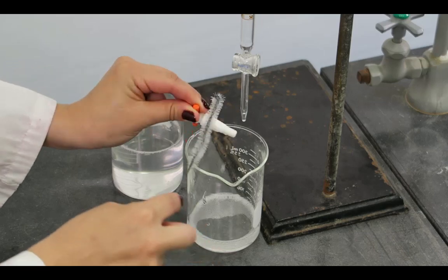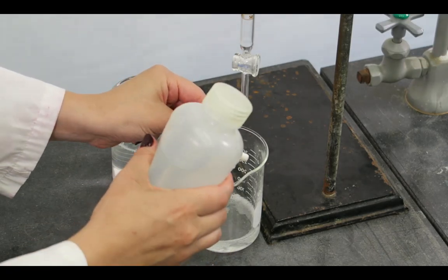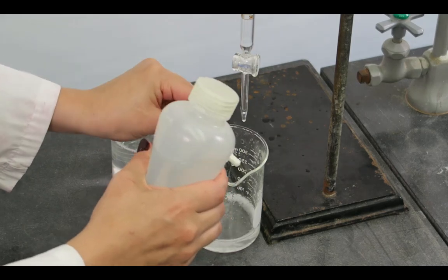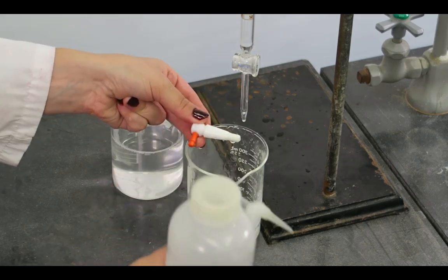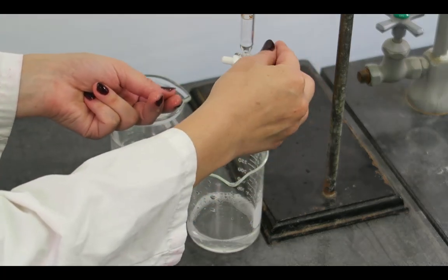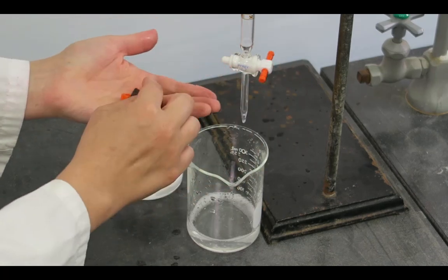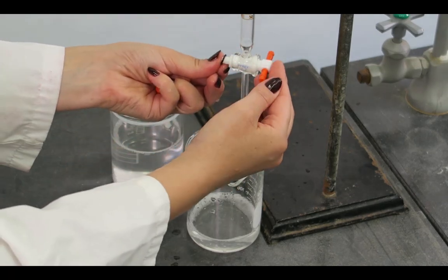Gently scrub the stopcock with warm soapy water and a brush. Rinse with deionized water, then replace the stopcock in the burette, followed by the teflon washer, rubber washer, and then the teflon nut.